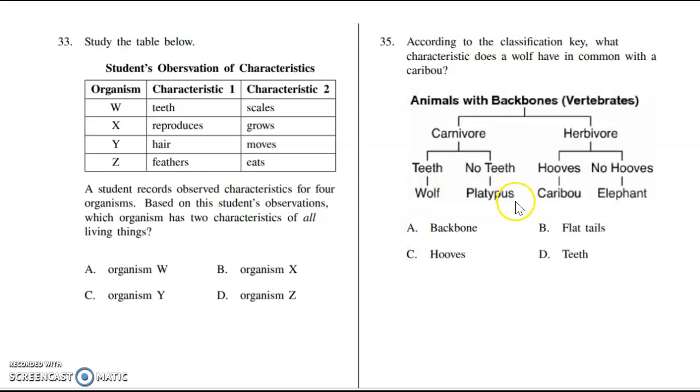Number 35, according to the classification key, what characteristic does a wolf have in common with a caribou? Wolf is here, caribou is here. The last place that they were connected was way back here at animals with backbones. They are both vertebrates, so a backbone would be our correct answer.